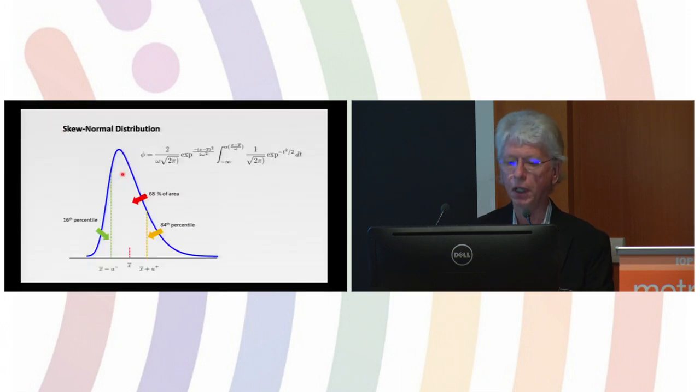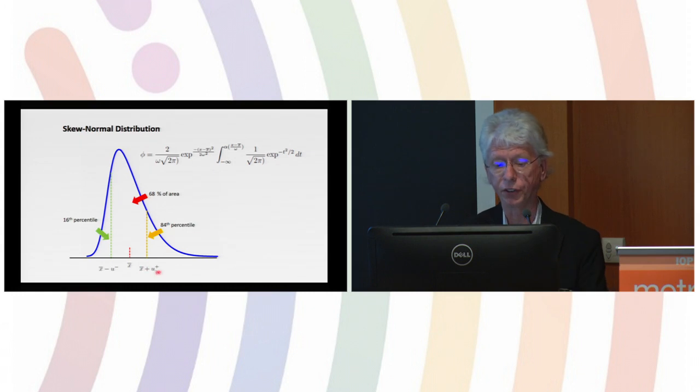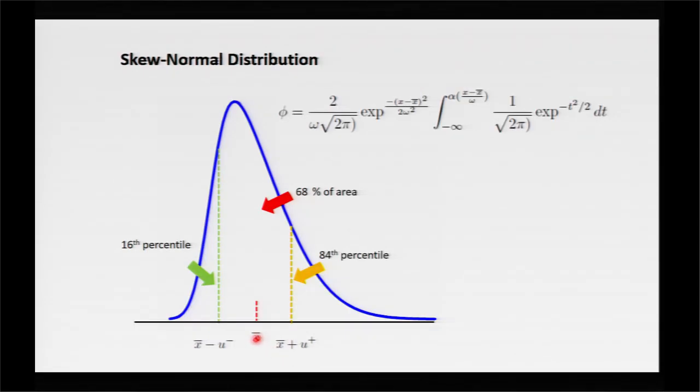This is the skew normal distribution, which is a three parameter distribution. It degenerates into the normal distribution when the uncertainties are identical.